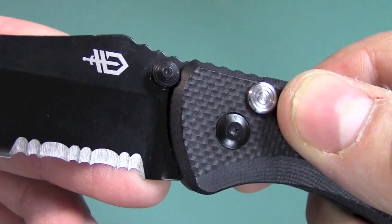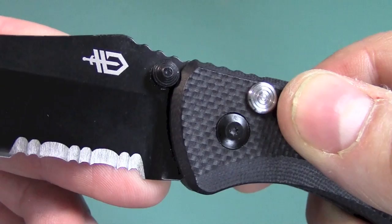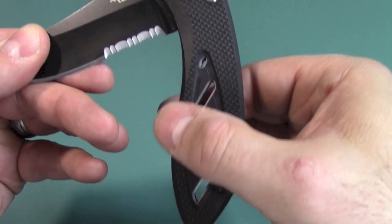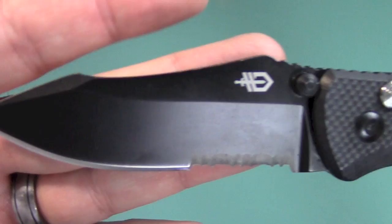The dual thumb studs you can see right there also acts as a blade stop. You can see how there's some metal coming through there, some of the liner coming through behind the G10. You do have G10 scales, a little bit skeletonized there, and there are some steel liners in there. Stainless steel.